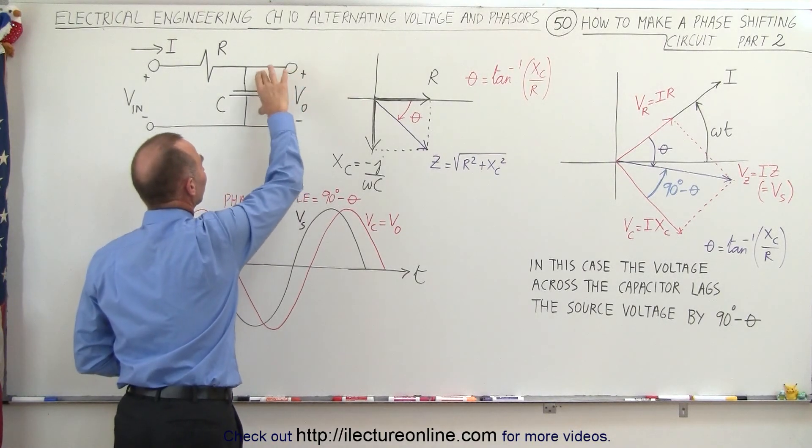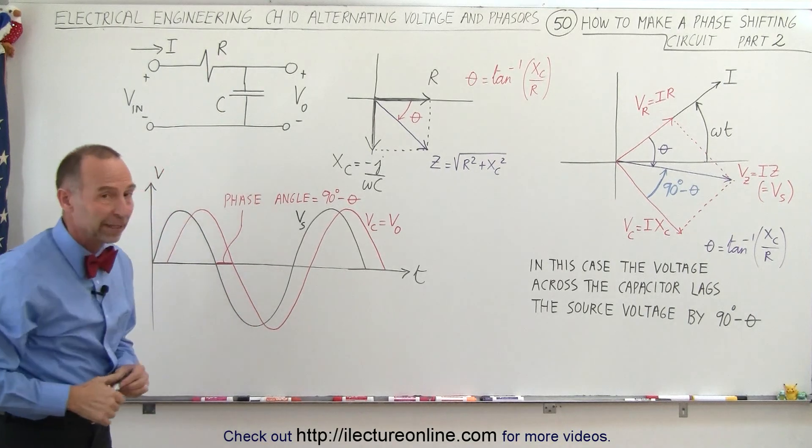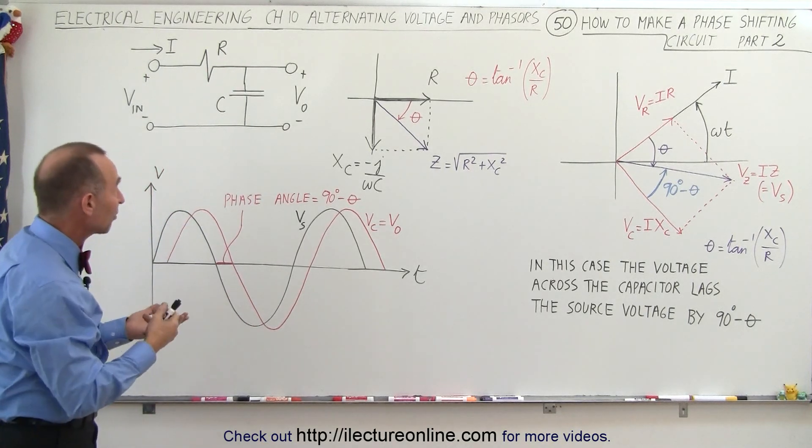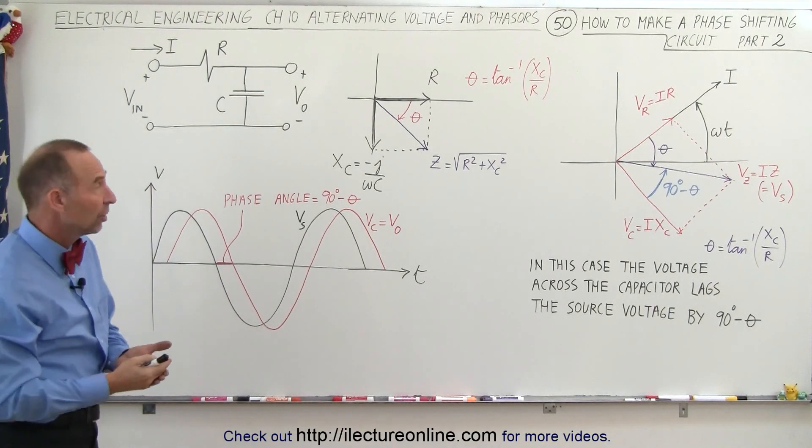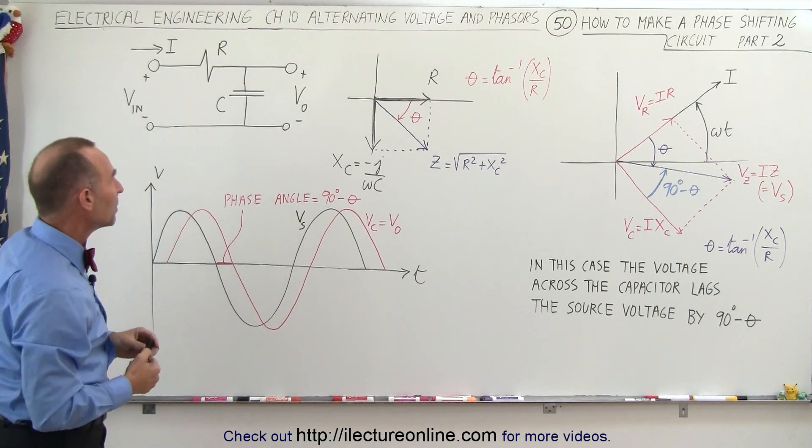Now the output voltage is the same as the voltage across the capacitor instead of the voltage across the resistor. Since the voltage across the capacitor is a lagging voltage, we then have a shift in the opposite direction.